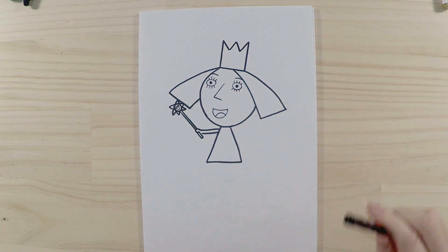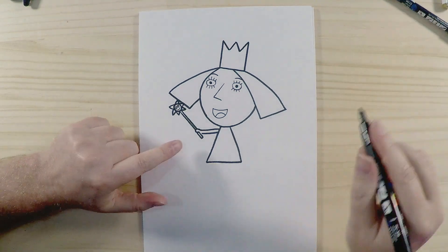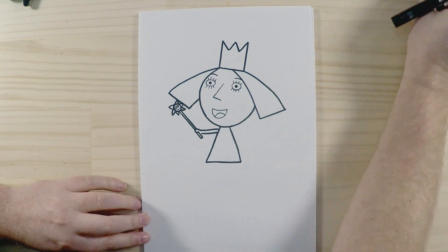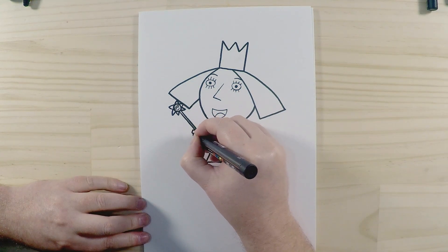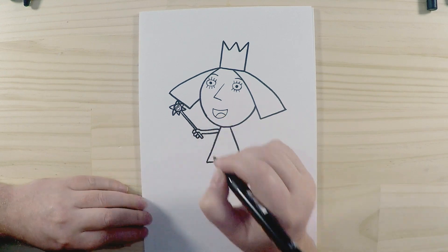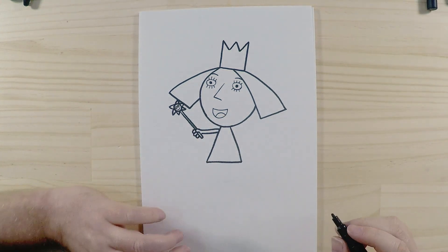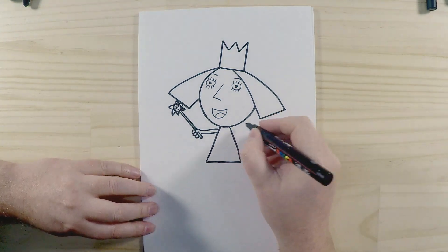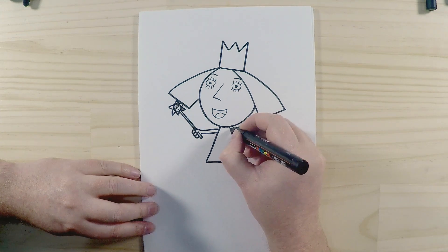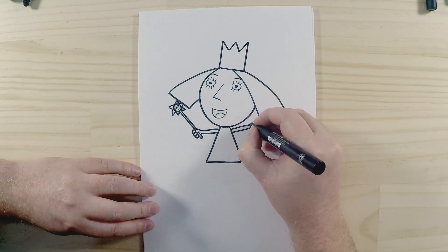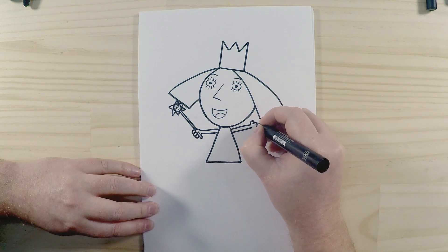All right, so once you've done that, we can finish off the hand. Behind that, we are going to draw her other three fingers. She's only got four fingers in total. Okay, now we do the other hand. We'll do the arm first, like that, and fingers: one, two, three, four.